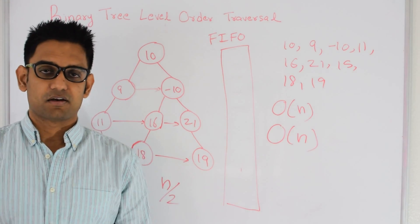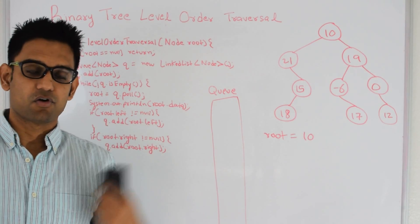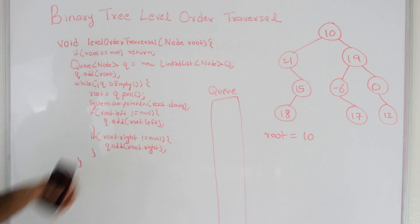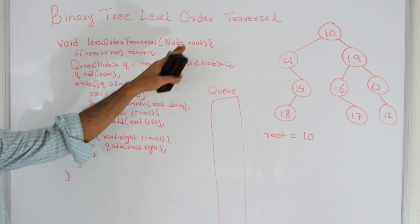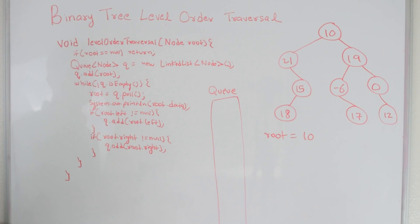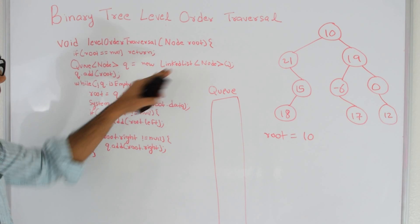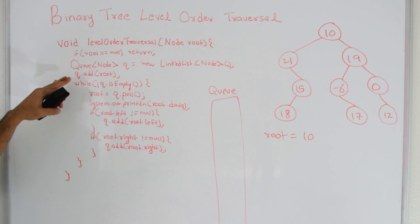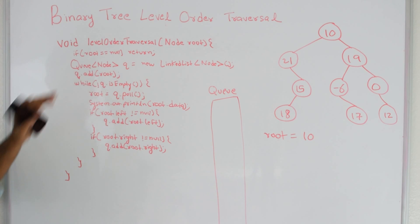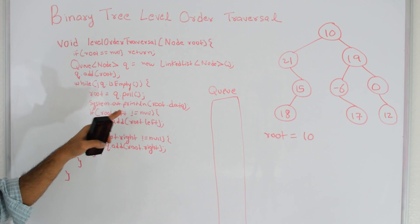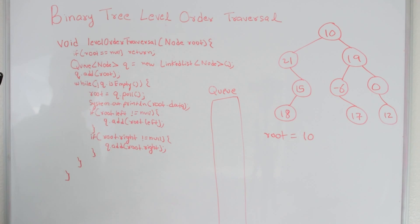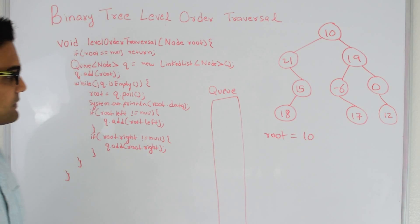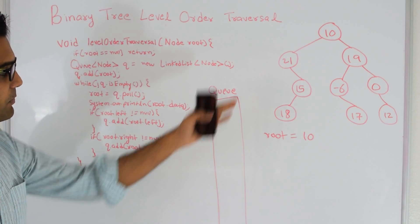Next let's look at the code for this algorithm. The function is called level order traversal; it doesn't return anything because we are just printing the nodes, and it takes the root of the tree. If the root is null it just returns; otherwise it creates a queue of nodes backed by a linked list — this is a Java declaration. Then I add root to the queue and keep repeating the process until the queue is empty: taking the top of the queue, printing out the root data, checking if left exists and adding it to the queue, and checking if right exists and adding it to the queue.